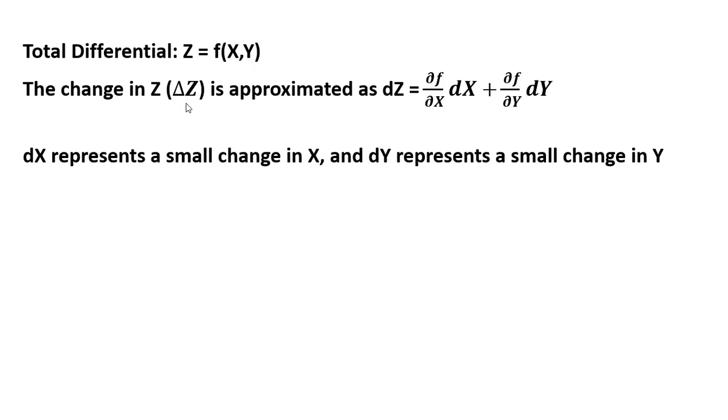The change in z, delta z, is going to be approximated as the following. So dz we can think of as a change in z, and it's going to equal the partial derivative of the function with respect to x times the change in x, plus the partial derivative of this function with respect to y times the change in y.